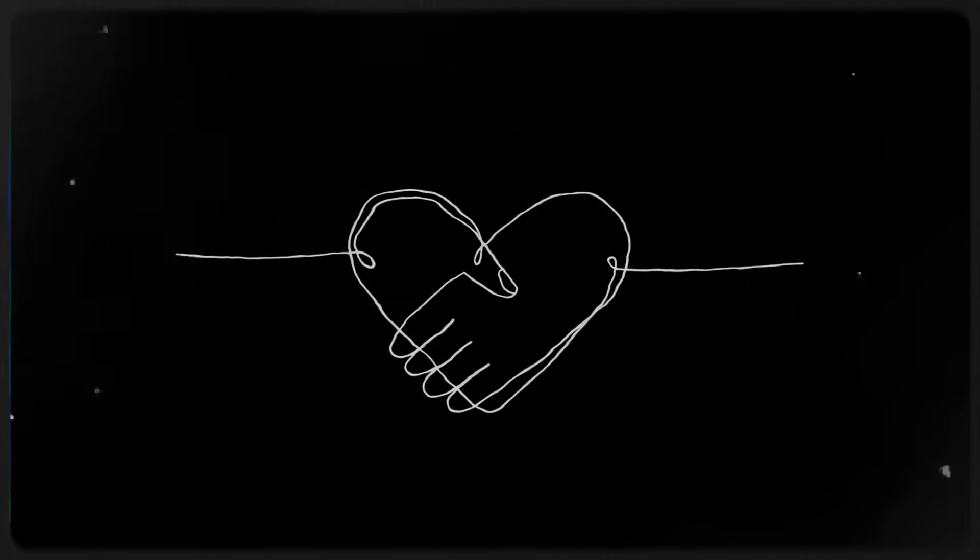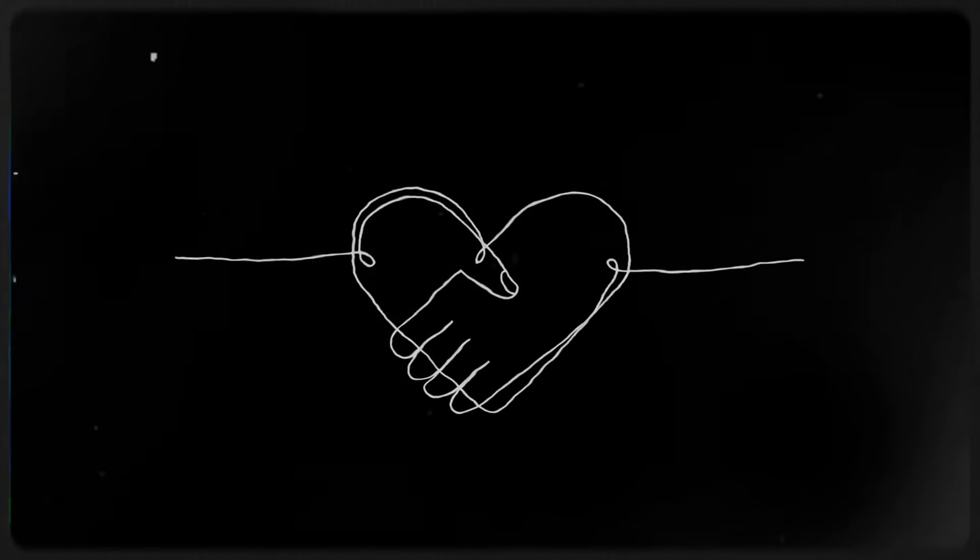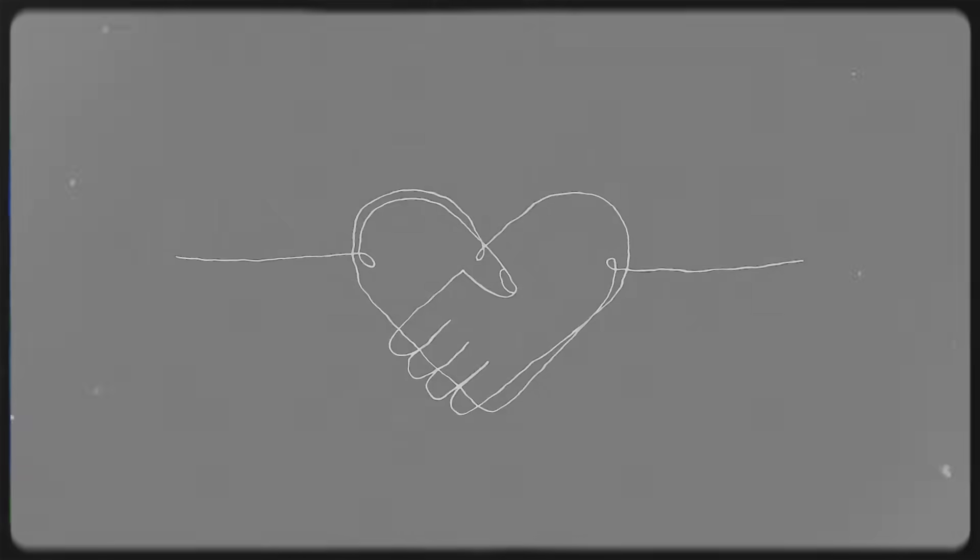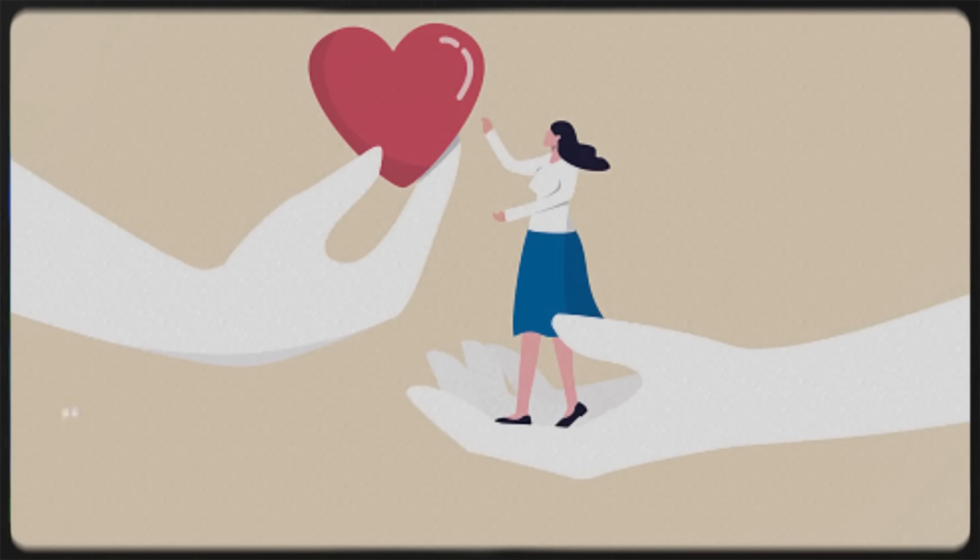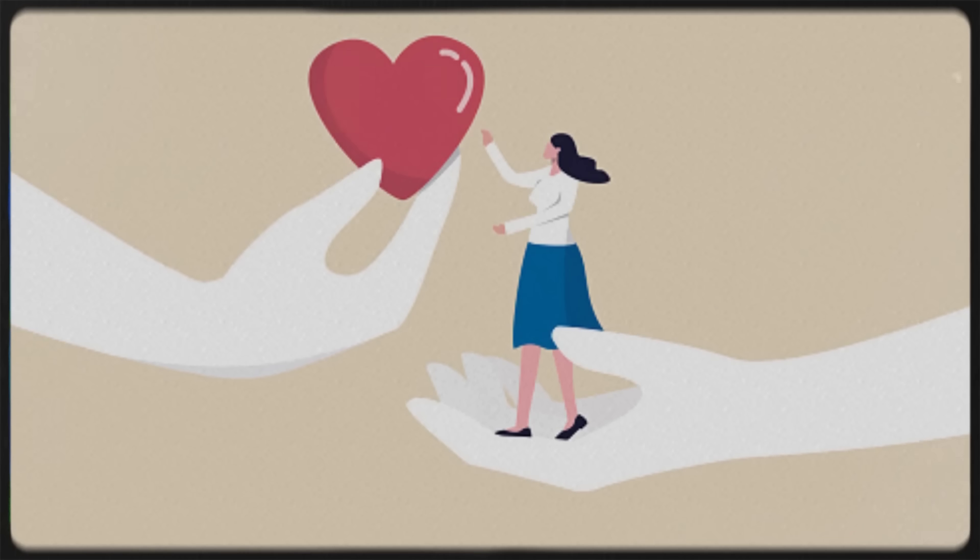Finally, there's attachment. The glue that bonds long-term relationships, fueled by oxytocin and vasopressin. Here's the wild part. These systems can work together or completely independently. That's why you can feel lust for one person, attraction for another, and attachment to someone else entirely.